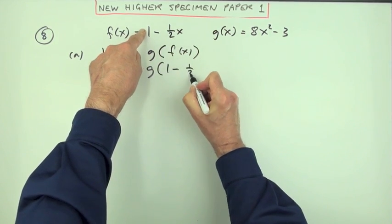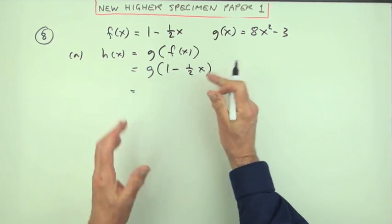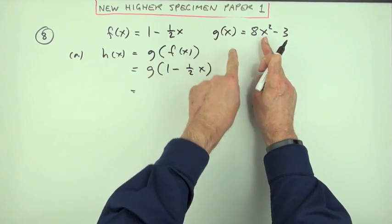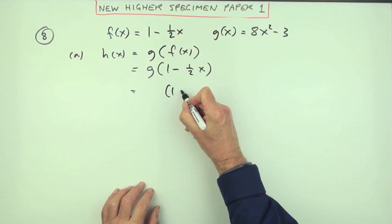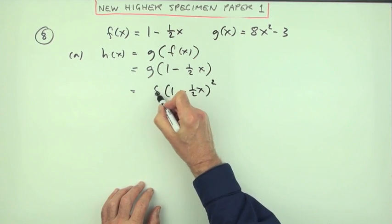So what you're going to feed it—I'm going to feed it this: 1 - ½x. What does g do to anything it gets hold of? It takes it, it squares it.